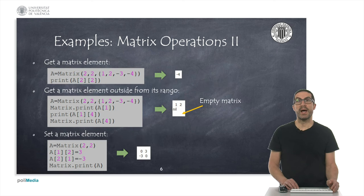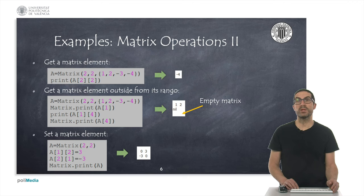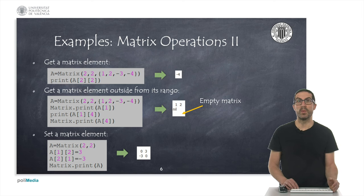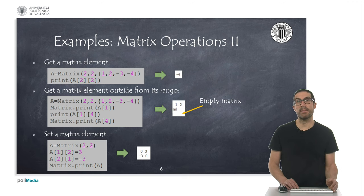We can individually access the elements of an array using the square bracket operators. If we do not indicate the second coordinate, it will return the corresponding row of the matrix as a row matrix. If we access an element that is outside the matrix range, as in the second example, it will return a nil value — for example, trying to access element 1,4 of a 2x2 matrix returns nil.